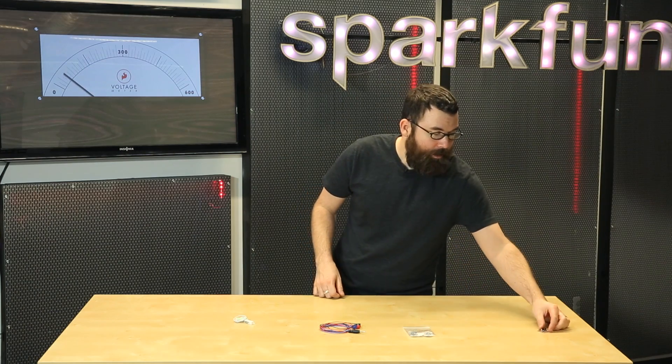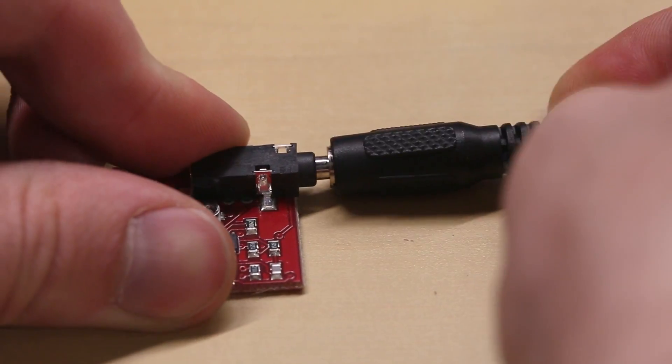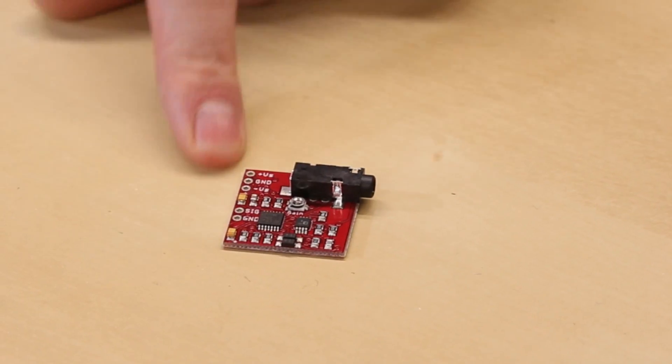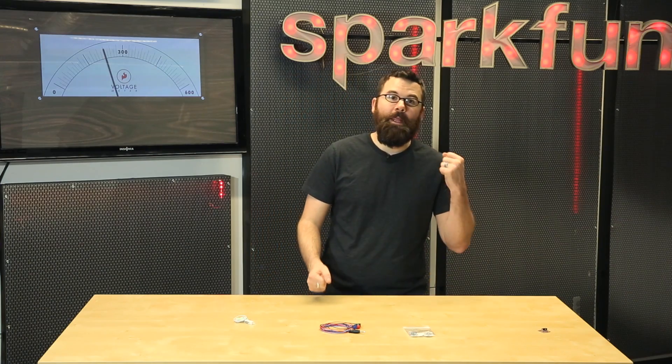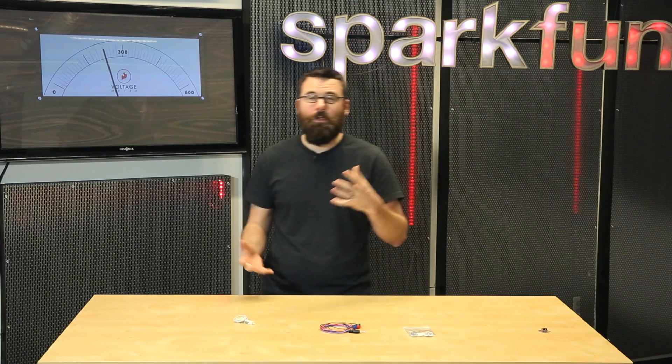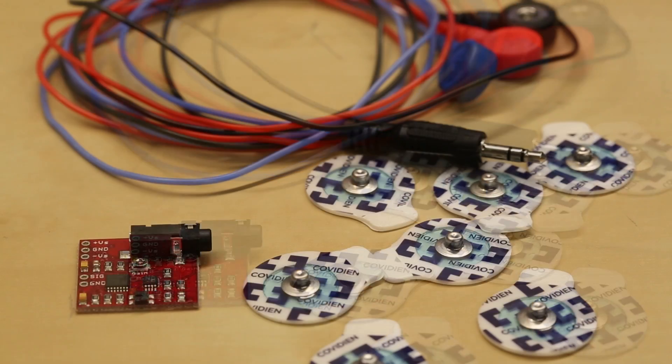The cool thing about the Muscle Sensor Board is you can detect muscle movements. You can just connect the electrodes into this little jack, and then connect your power and your signal over here, and you can very easily detect when a muscle is activated. So you can do all sorts of different things, like using your muscle as an input into a microcontroller.